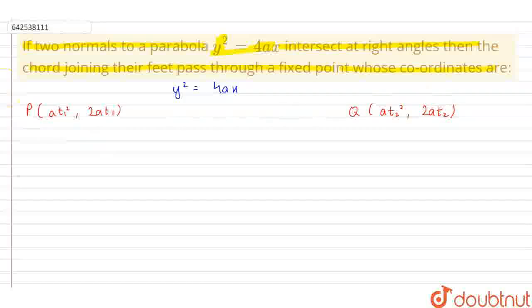Then the equation of the normals will be y equals minus t1x plus 2at1 plus at1³. And here the equation will be y equals minus t2x plus 2at2 plus at2³.